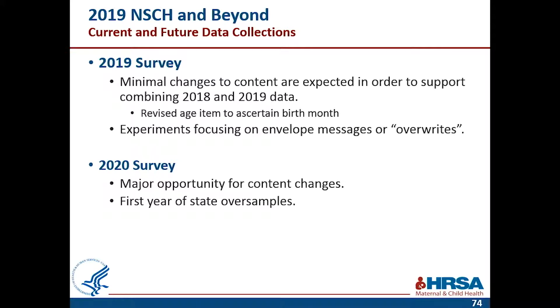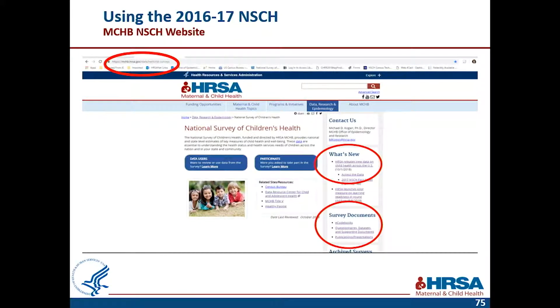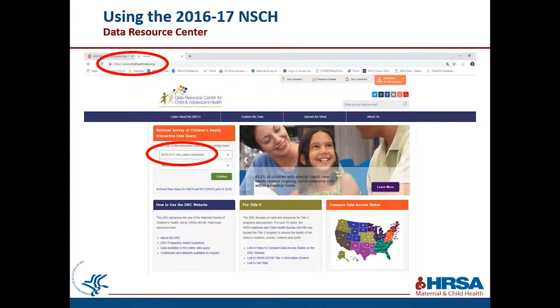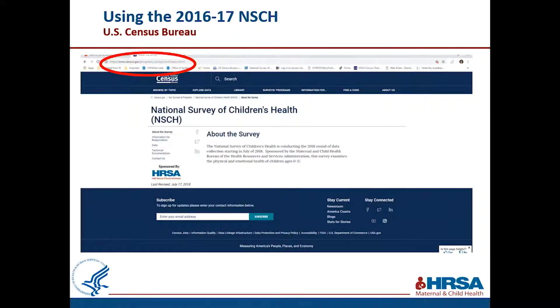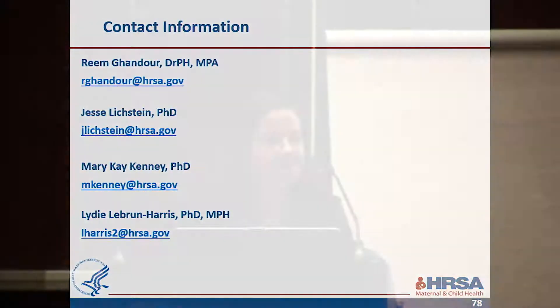We are really down to the wire here. To wrap up quickly: for 2019 we'll be in the field starting in June with very few changes. For 2020, we're already planning — we'll be doing cognitive testing this summer, and this will be our next big opportunity to add content, so please let us know if there's something you'd like to see in the survey. There are three places to access the data: the HRSA website, the Data Resource Center at childhealthdata.org, and the Census Bureau to download the data directly. We don't have much time for Q&A but we're happy to hang around after the session, and please feel free to email any of us. Thank you for your time this morning.